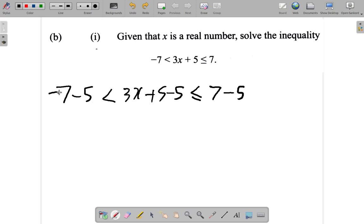Now, negative 7 minus 5 is negative 12. That is less than 3x. The 5 minus itself is gone, and that is less than or equal to 7 minus 5, which is 2.